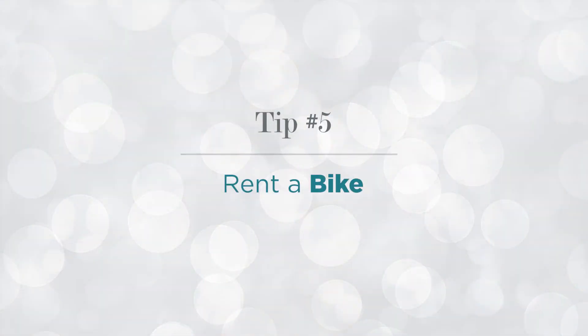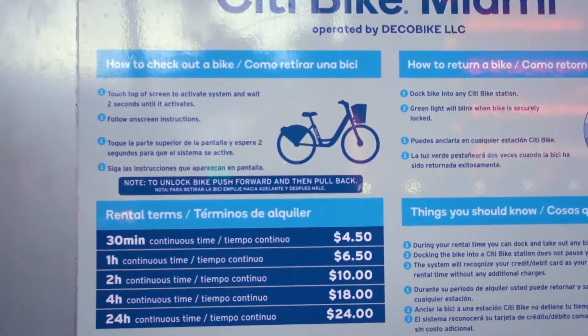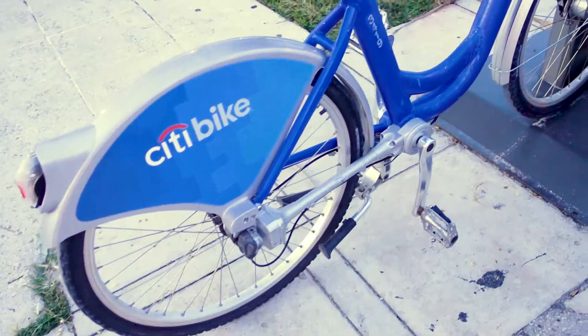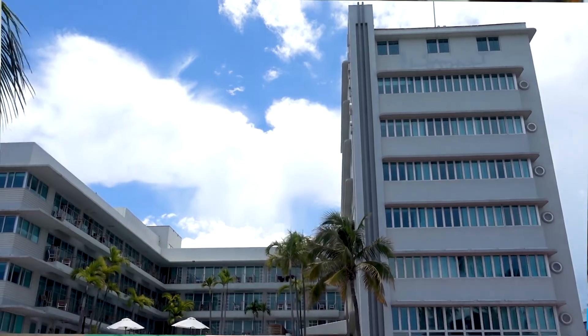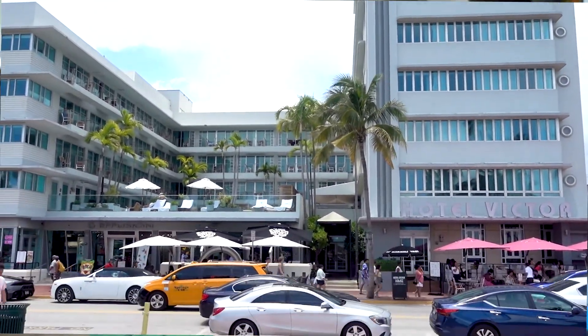Another way to save money on transportation in South Beach is to take a bike. There are public bikes you can rent just using your credit card — go to any location on Miami Beach or South Beach, grab the bike, swipe your card, and you're good to go. Some hotels also provide free bikes as a resort amenity. For example, Hotel Victor gave us free bikes to ride back and forth between South Beach and Miami Beach at our leisure, so check your hotel amenities to see if that's something they provide.